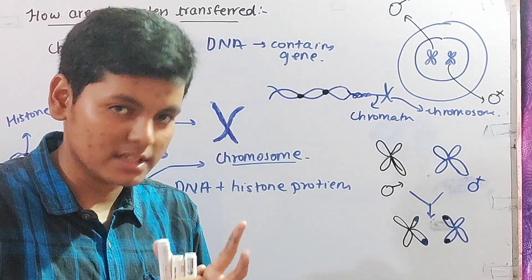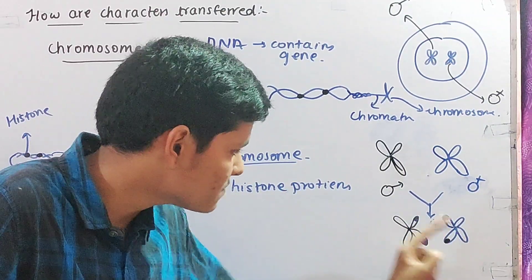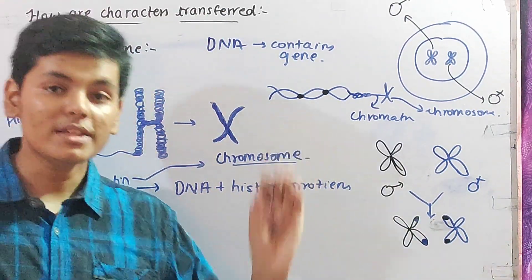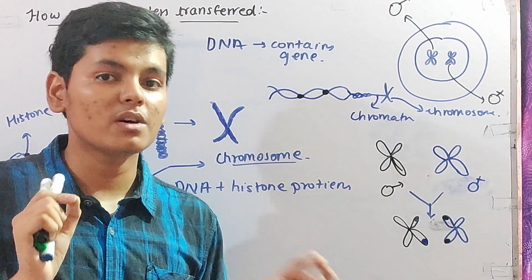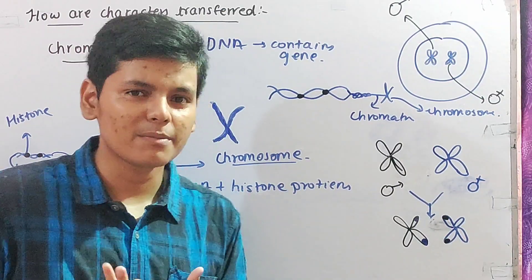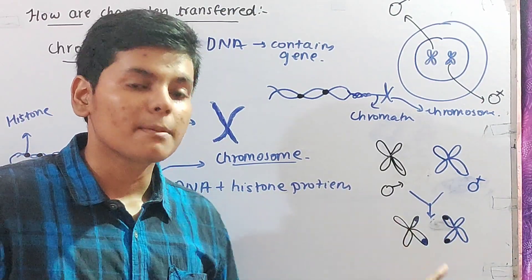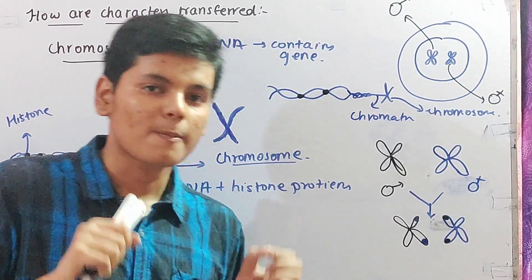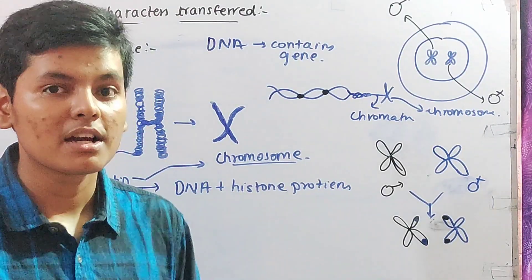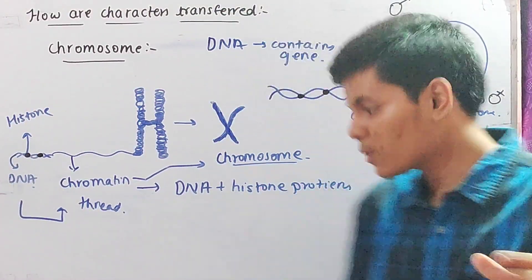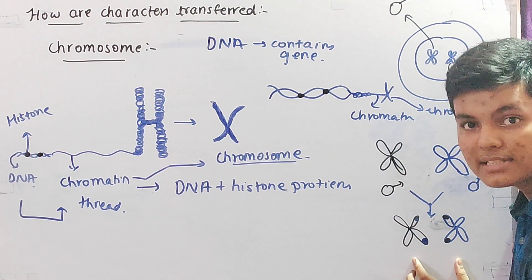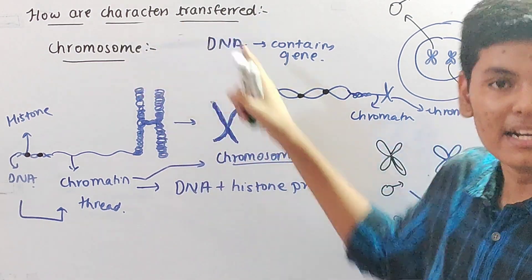When both male and female chromosomes are fused together, there is a transfer of information. The DNA is being copied. When the DNA is copied, it is not 100% accurate — some variation and mutation takes place, which then contributes to variation in the offspring. Hence we can say that the characters are transferred through genes in the DNA.